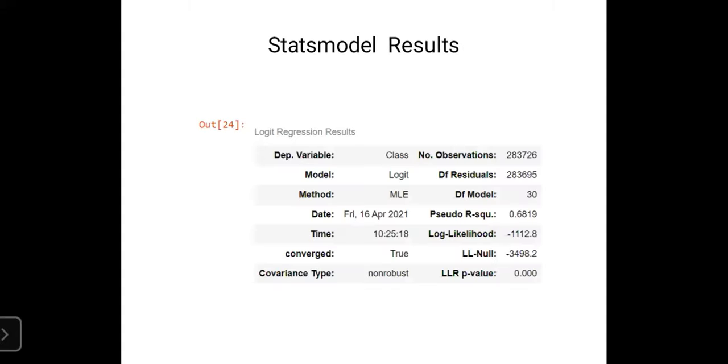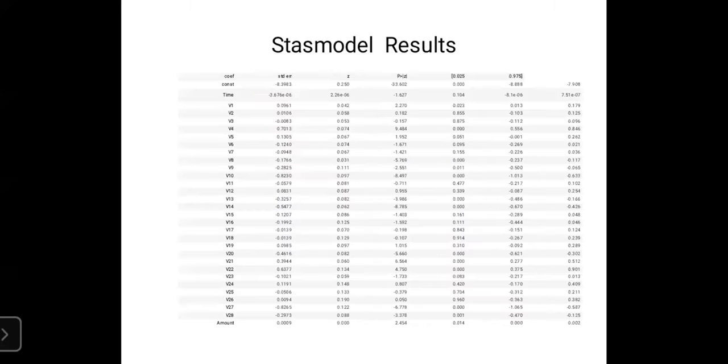This is the state model results that we got. As I told earlier, the dependent variable we have taken is class. We used the model logit function. And we used the method maximum likelihood estimation, which is used to check the optimization that results in the best fit by finding the set of parameters. Then log-likelihood null, which is the value of likelihood of the model. And after that, pseudo R-squared, which reasonably represents how much the regression model is fit. The model is said to be fitted if the value of R-squared is close to 1.